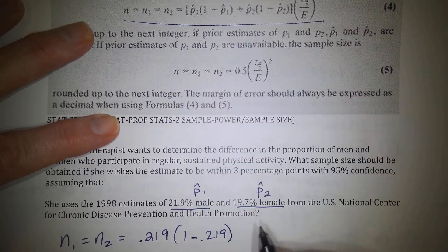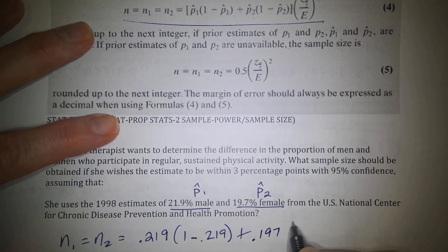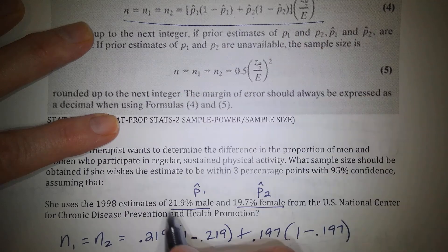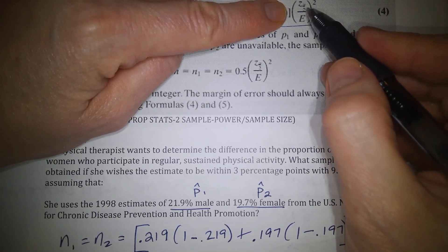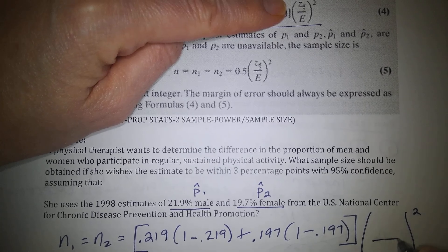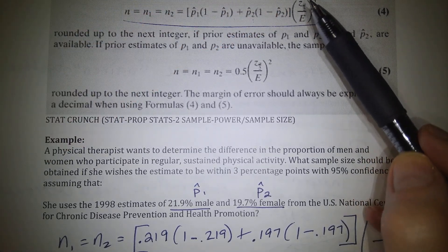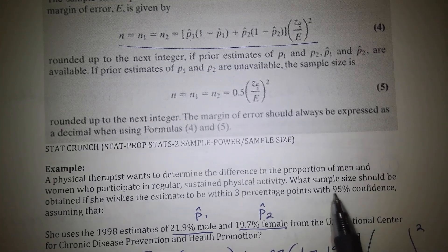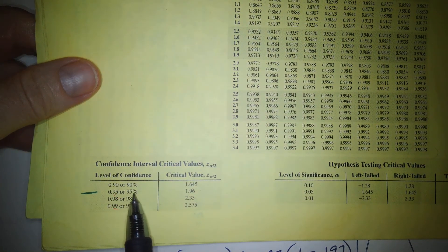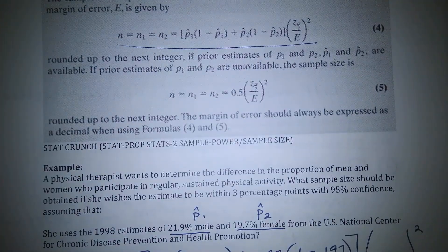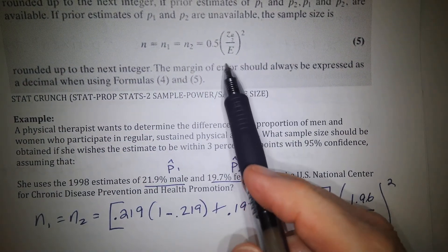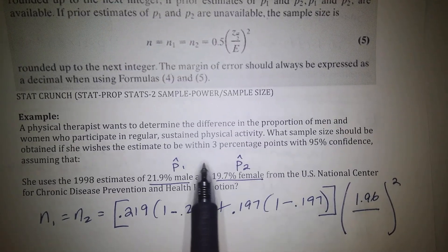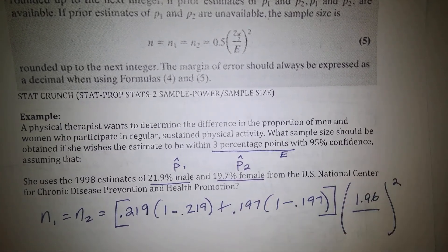Step two: create the null and alternate hypotheses. The null states the two proportions are equal — the proportion of those who don't wear a seatbelt equals the proportion of those who smoke. The alternate states they are not equal — it would be absurd to assume one hazardous activity automatically leads to another. We test at the 0.05 level of significance and then calculate the test statistic using the values from the contingency table.